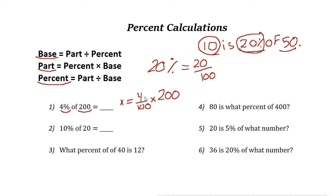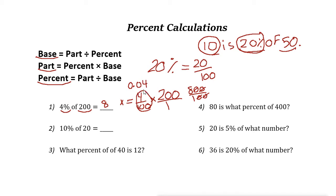So 4 over 100 times 200 gives 800 over 100, which simplifies to 8 — cancel the two zeros. So 4% of 200 is 8. You could also write 4% as 0.04 and use your calculator: 0.04 times 200 equals 8.